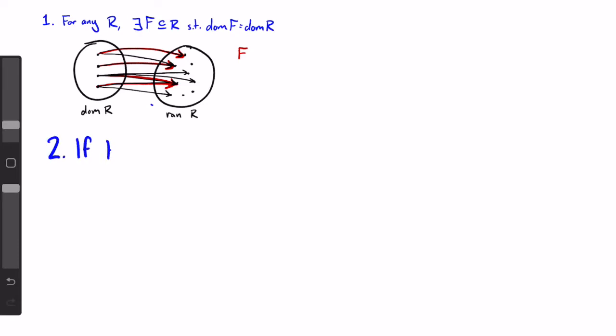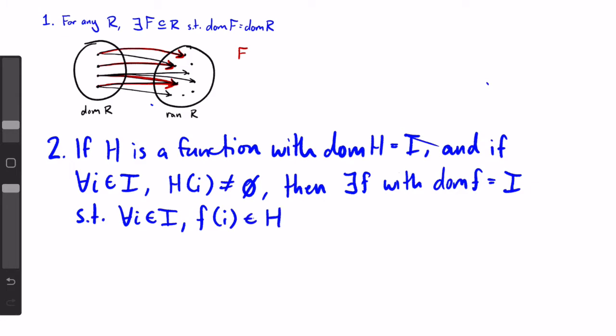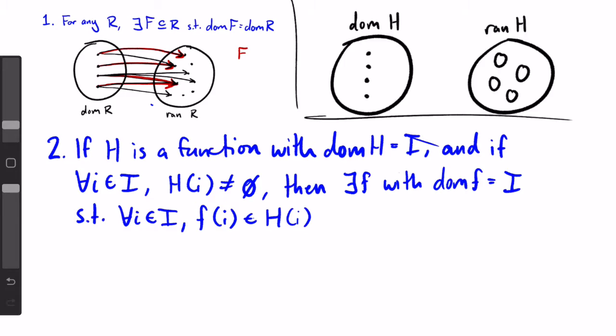So form two states, if h is a function with domain i, and if for all little i in i, h(i) is non-empty, then there is a function f with domain i such that for all little i in i, f(i) is in h(i). That is a really long statement, but what it basically is saying is that h is a function that takes elements in the domain and maps them to non-empty sets.